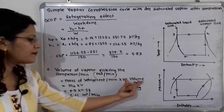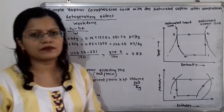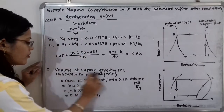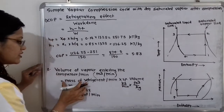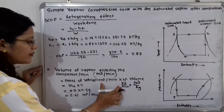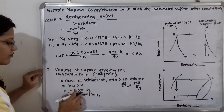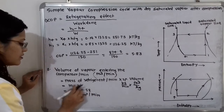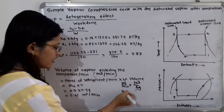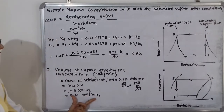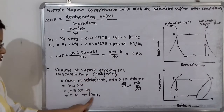To find the volume, multiply the mass circulation rate by the specific volume: V = ma × v = 4.5 kilogram per minute × 0.58 meter cube per kilogram = 2.61 meter cube per minute. The kilogram units cancel, giving the volume of vapor entering the compressor as 2.61 meter cube per minute.